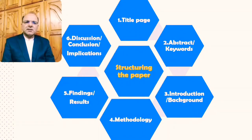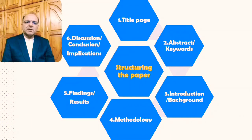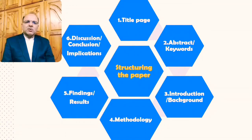The next part of the research paper is the introduction or background section. In some papers we have an extended introduction and background, and in some papers we also include the literature review within that section. In other cases, keeping in view the requirements of particular journals, introduction and background may be followed by a separate literature review section. You can either combine the literature review in the introduction or have a separate section for it.